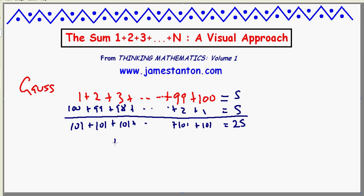So how many 101s do we have? Well, 100. So 100 times 101 is twice the sum. So half of that must be the sum. That's 50 times 101. That's 5,050.